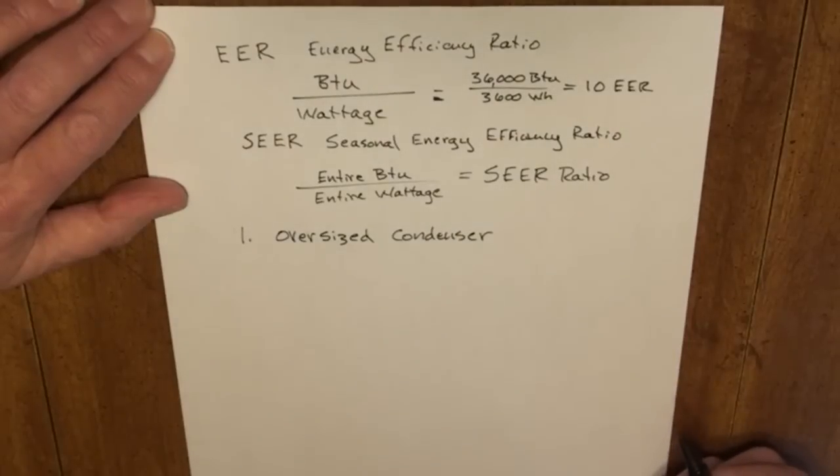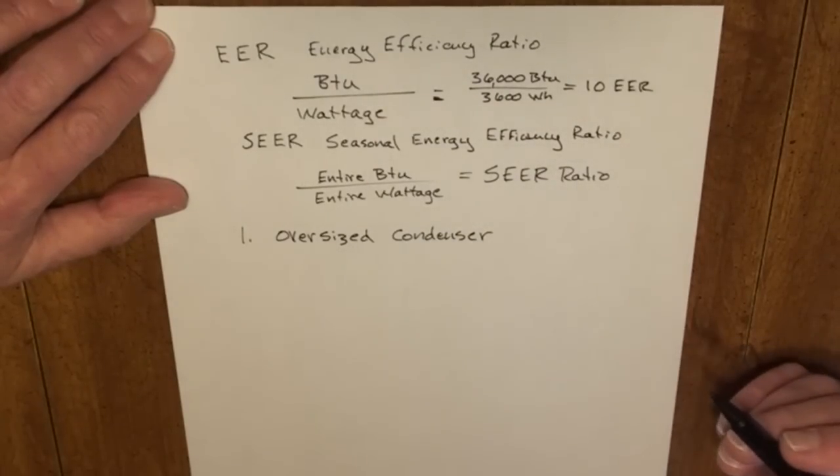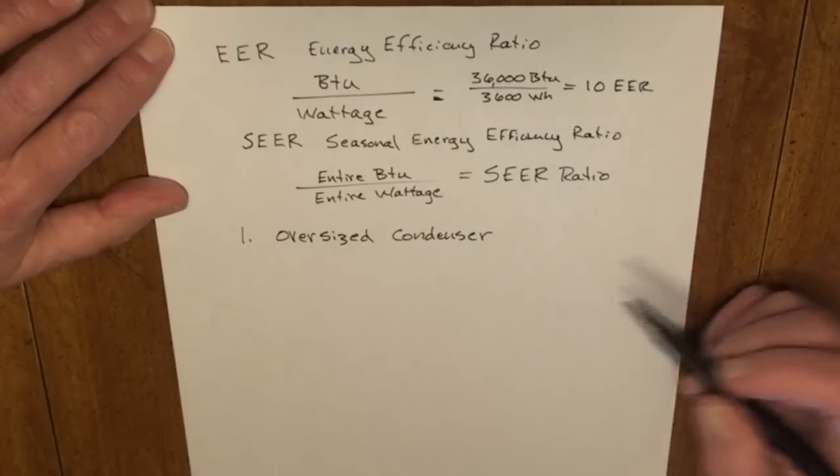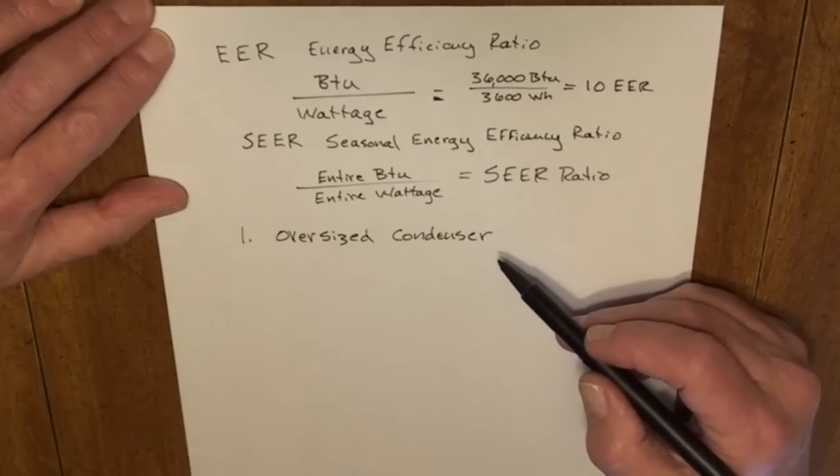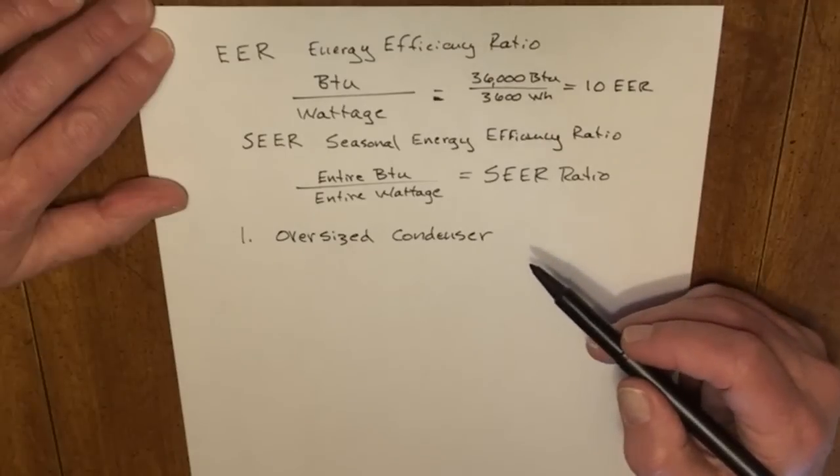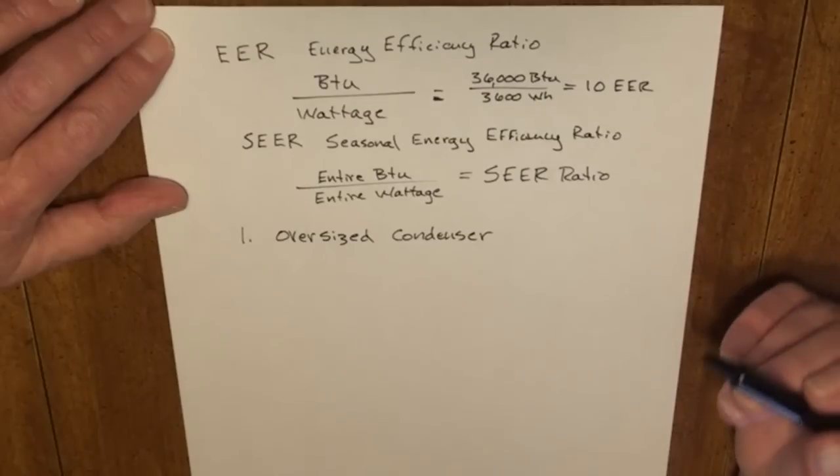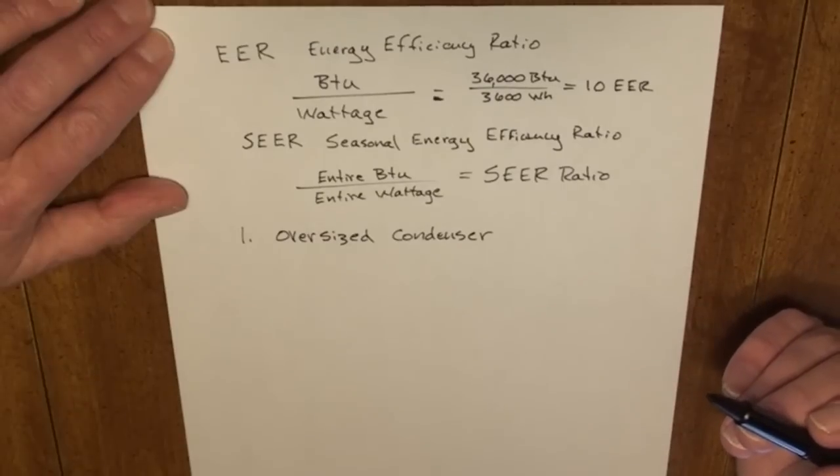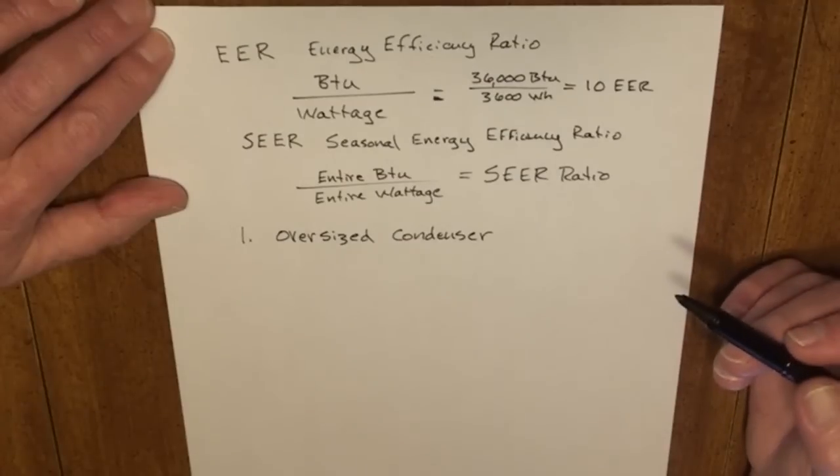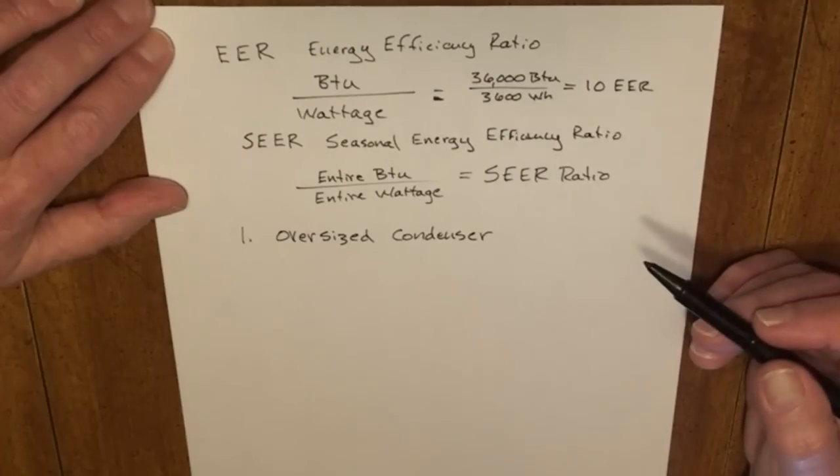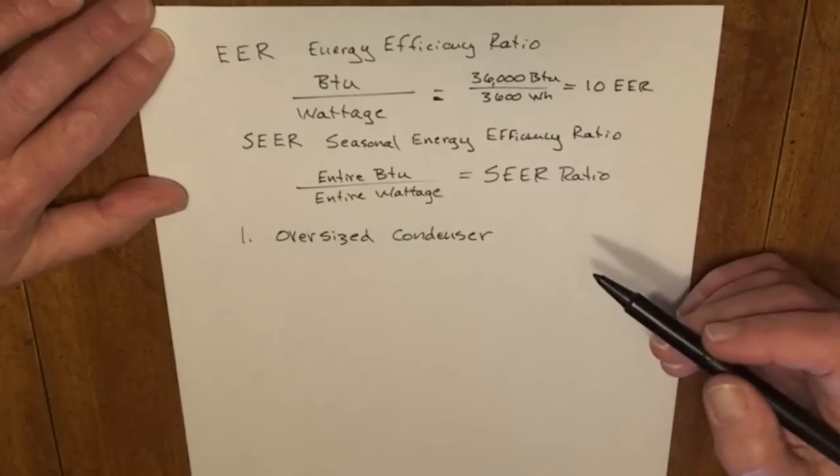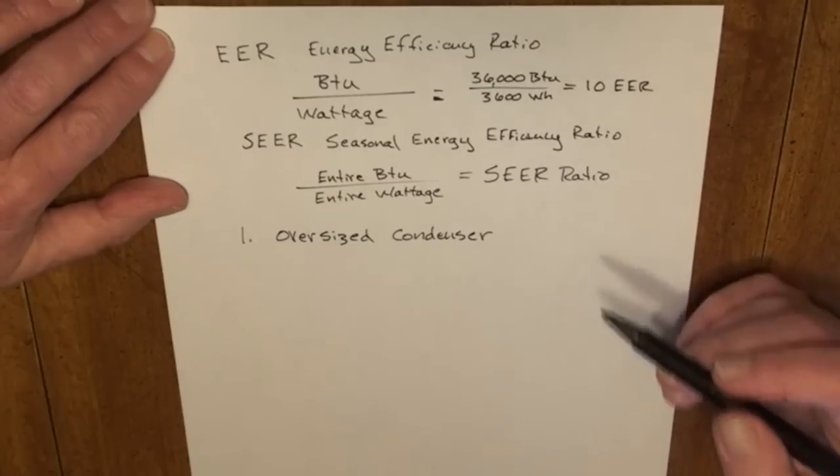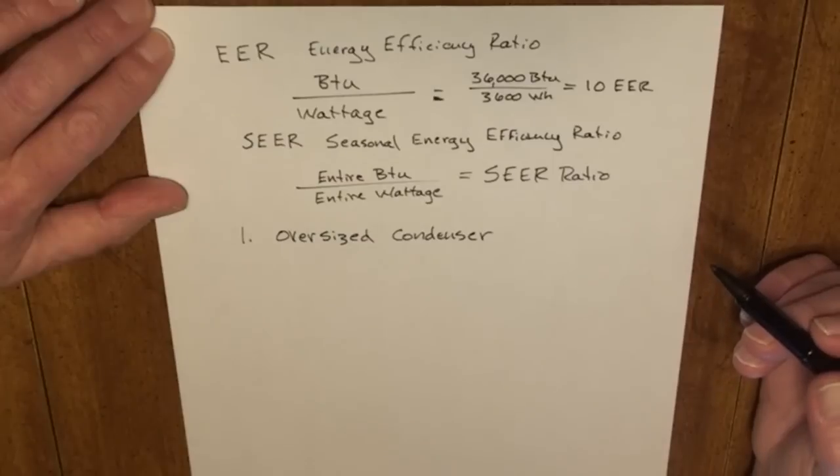The oversized condenser can be large enough to use a fixed orifice metering device and achieve the 13 SEER minimum rating. The oversized condenser allows the refrigerant to boil at a lower pressure. Lower pressure equals less work on your compressor, less work equals lower amp draw, and lower amp draw equals less wattage consumption.